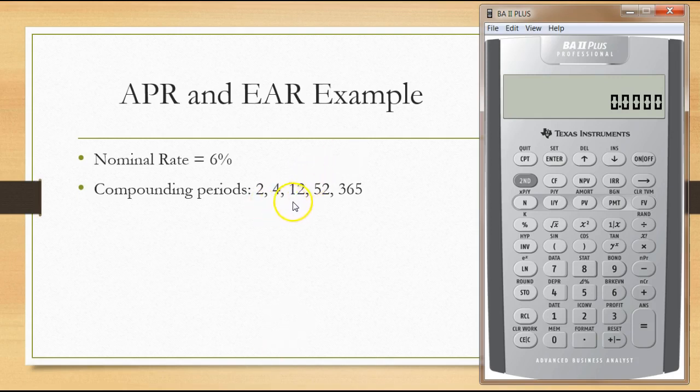Before we do that, I want to show you how to set the calculator to four decimal places. This is more accurate when using interest rates, as the third and fourth decimal places can matter with specific compounding periods. To do that, press Second, then Format, then Decimal.